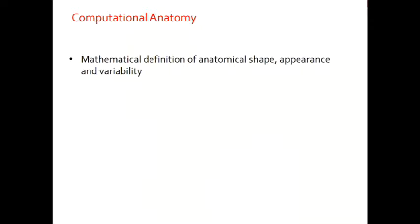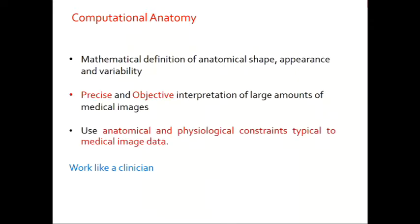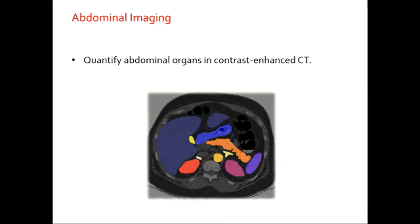Computational anatomy — I will define it as the mathematical definition of anatomical shape, appearance, and variability. We have anatomical and physiological constraints because we know how the human body is formed. Everybody should have the liver on the lower right side — if your liver is somewhere else, that's a big, big problem. We all have the same anatomy although we have many differences between us. This is something that a radiologist trains for four years in the United States before they can perform their work.